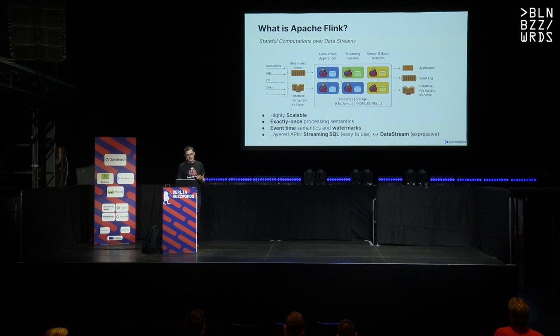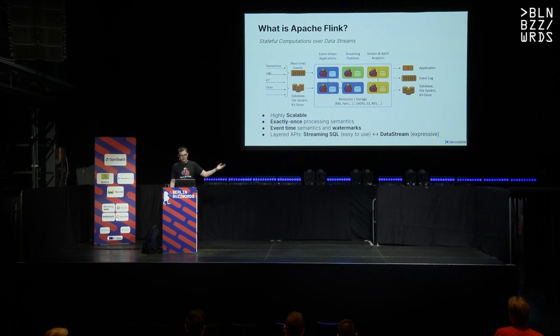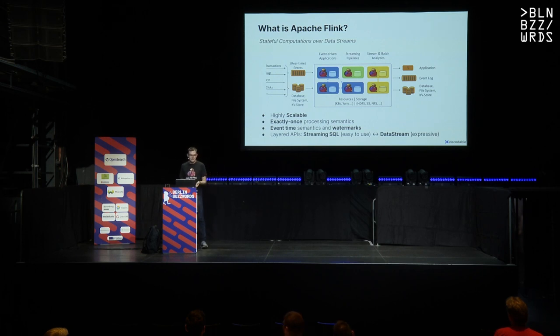You can use all these features with different APIs. There is a spectrum from Streaming SQL, which is very easy to use — just write a few lines of pretty much standard SQL and it generates a Flink job for you — or you use the more low-level DataStream API in Java, Scala, Kotlin, or Python, which is much more expressive and gives you access to low-level primitives like event time and exactly-once.